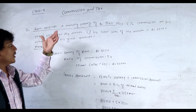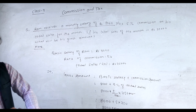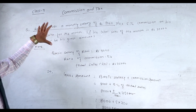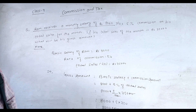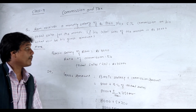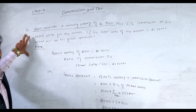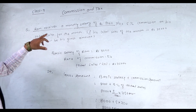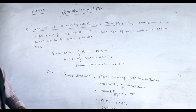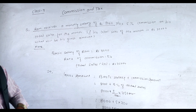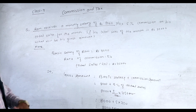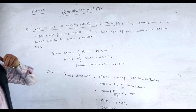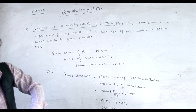I hope you all understand the solution of the given question. I am going to describe the question again, and I hope you will be able to do the solution yourself next time. Question number one: Ram receives a monthly salary of Rs 8000 plus 5 percent commission on his total sales for the month. If his total sales of the month is Rs 75000, what will be his gross amount? Basic salary: Rs 8000, rate of commission: 5 percent, total sales SP = Rs 75000.